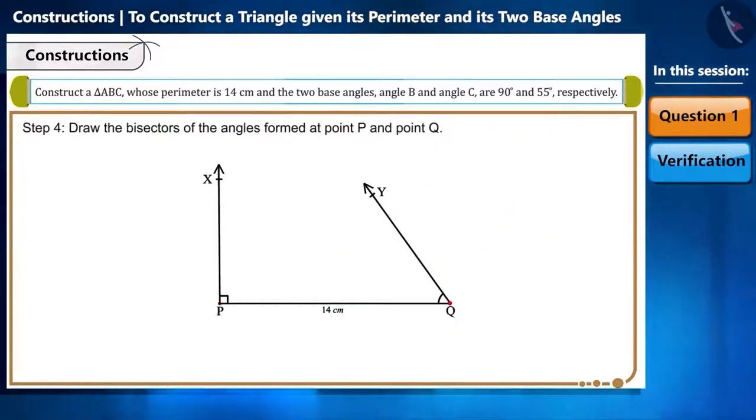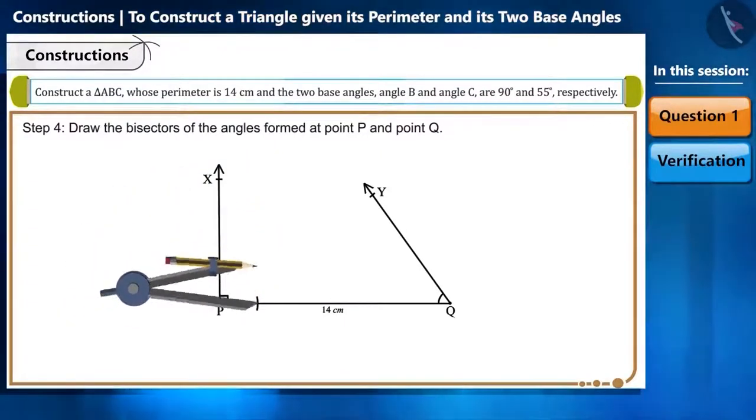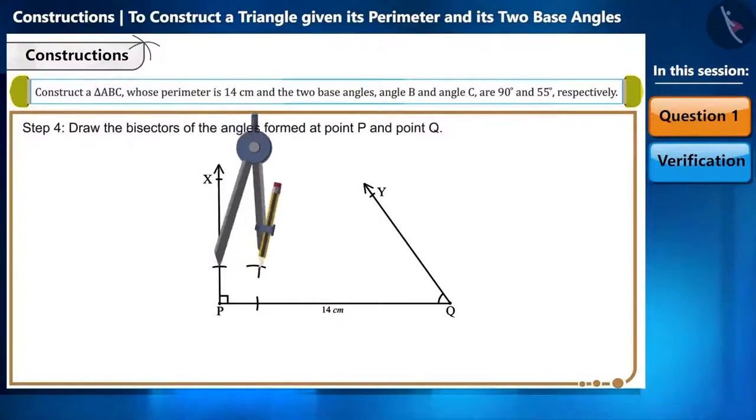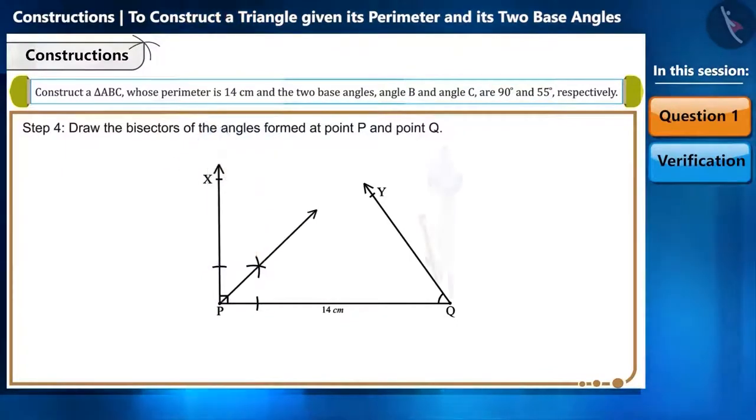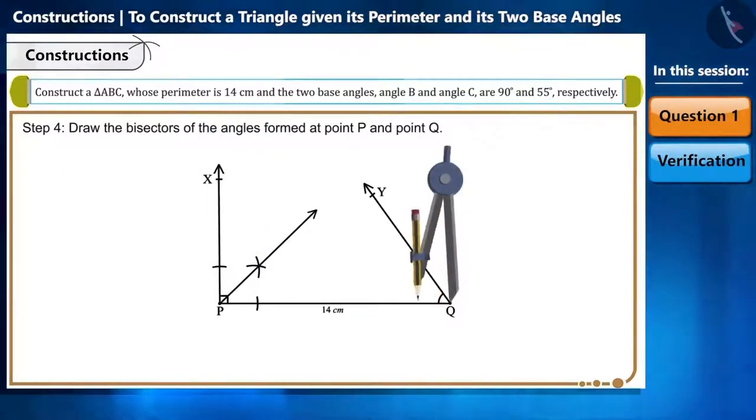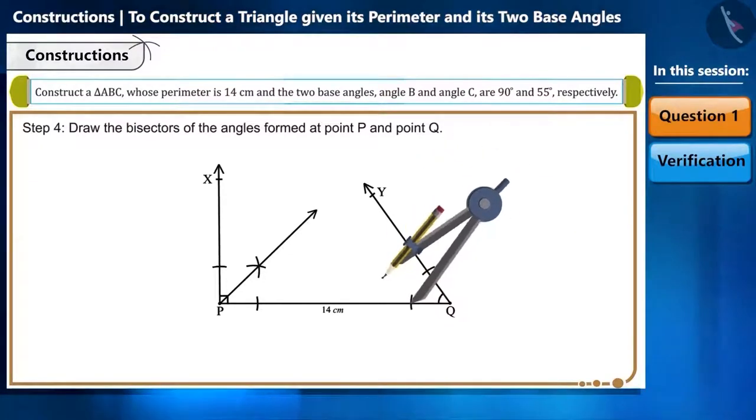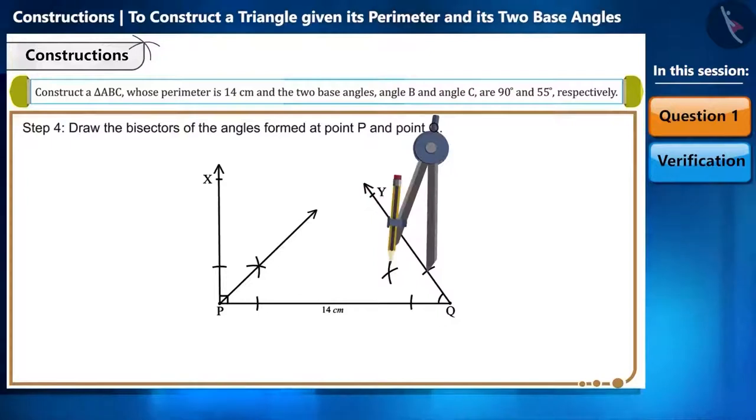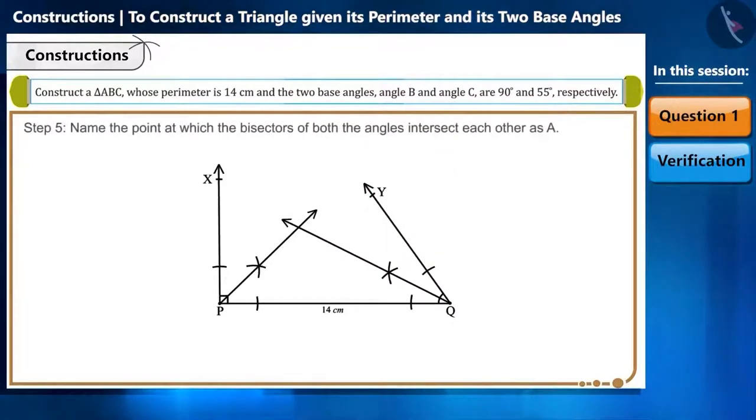Step 4: Now, draw the bisectors of the angles formed at point P and point Q. Step 5: Name the point at which the bisectors of both the obtained angles intersect each other as A.